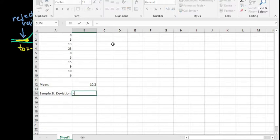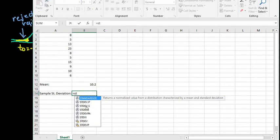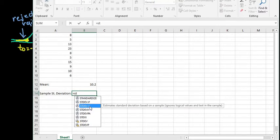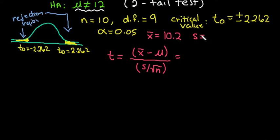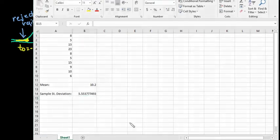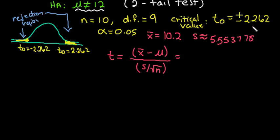For the standard deviation I'm going to do equals stdev.s, make sure you use s because that is the sample standard deviation, the p is the population standard deviation so we would use the standard deviation dot s. And then I hit enter and we see that it's 5.53778493. So we can come over here and say that x bar is 10.2 and s is approximately 5.553778.